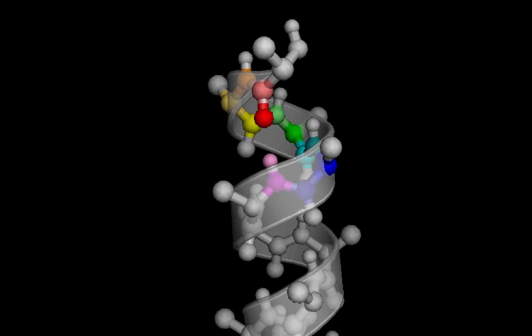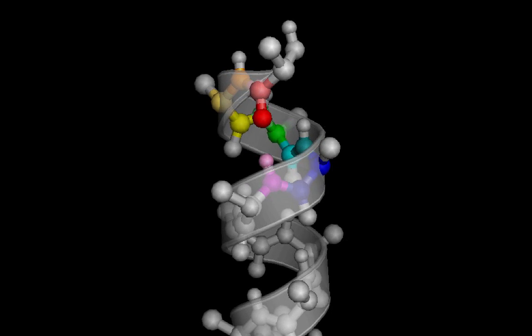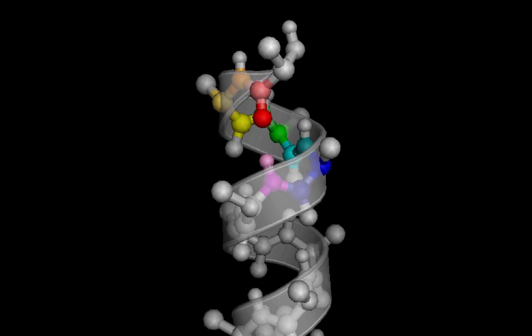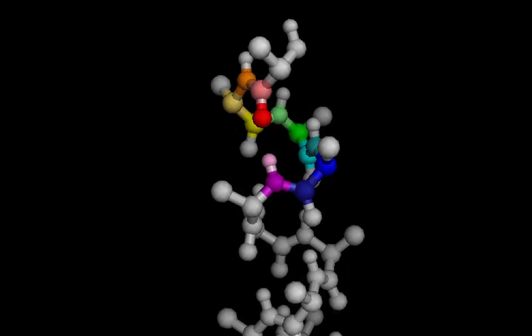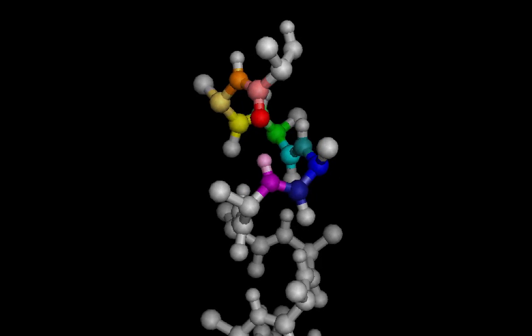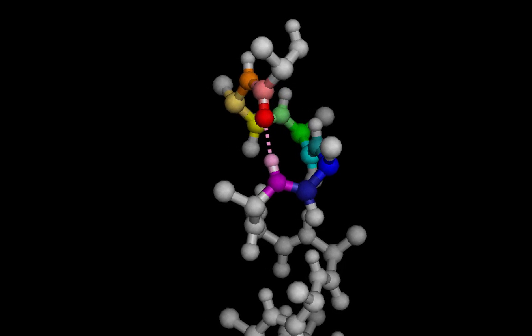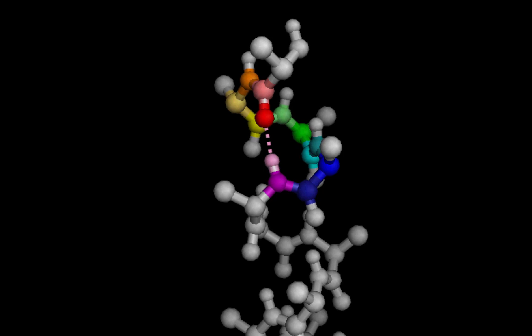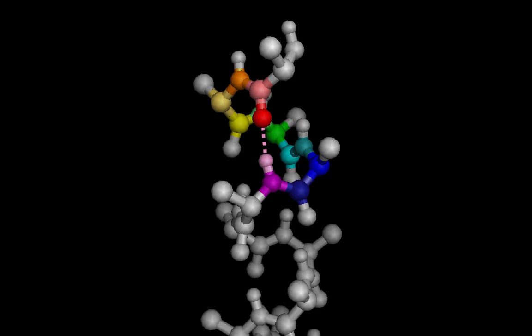Another way to define the alpha helix is in terms of the number of atoms required to complete a hydrogen bond. Here, each atom between the hydrogen bonding atoms is a different color. If we strip away the helix cartoon, we can see that there are thirteen atoms between the hydrogen bond, including the oxygen and the hydrogen. This shows us that a hydrogen bond actually forms a thirteen-membered ring.